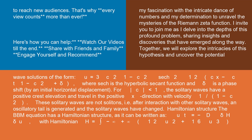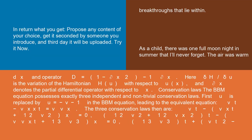Hamiltonian structure: the BBM equation has a Hamiltonian structure, as it can be written as u_t = -D(δH/δu), with Hamiltonian H = ∫[-∞,+∞](1/2*u² + 1/6*u³)dx.